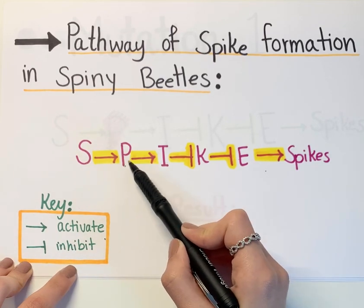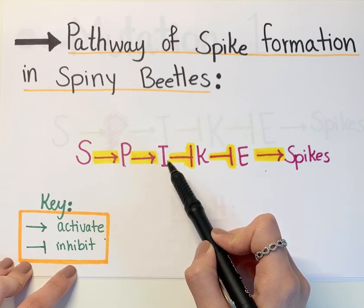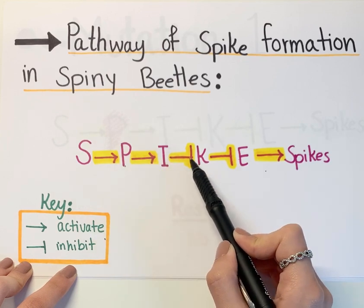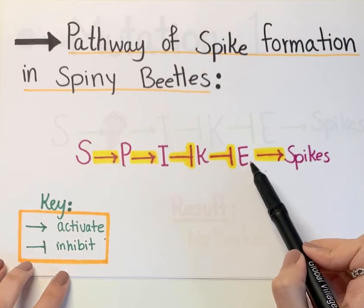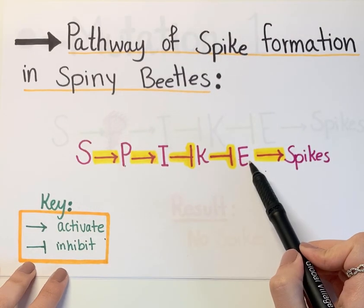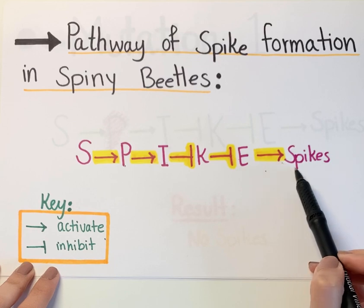Formation of spikes in certain cells of the ectoderm of the spiny beetles is influenced by five different genes. S gene activates the P gene. P gene activates the I gene, which is necessary to repress or inhibit the K gene, because otherwise E gene will be repressed by K gene and spikes cannot form. E gene is necessary to eventually activate and result in the appearance of spikes in the cell.